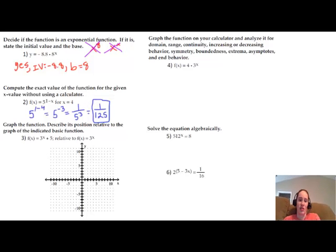Graph the function. Describe its position relative to the graph of the indicated basic function. Now this will probably be on the calculator part, but if it wasn't, your best approach would be to use a table of values to plug in some numbers and get some points. But if you look at this either on your calculator or with points plotted, this plus 5 here is going to shift our graph up 5.